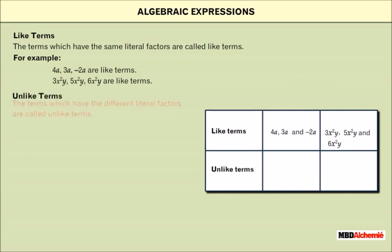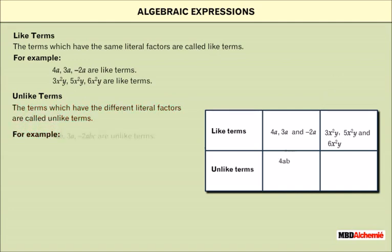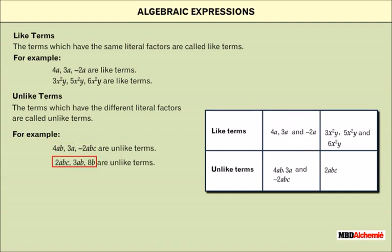Unlike Terms: The terms which have different literal factors are called unlike terms. For example, 4ab, 3a minus 2abc are unlike terms. Also, 2abc, 3ab, 8b are unlike terms.